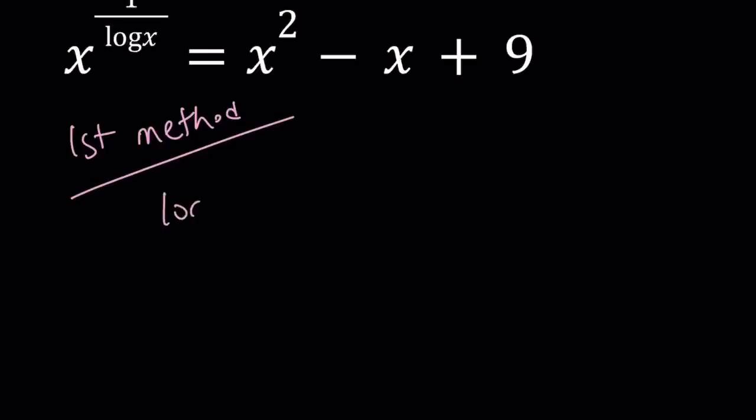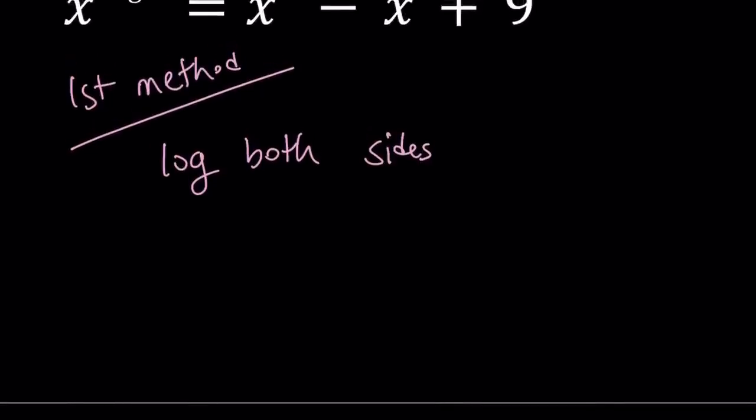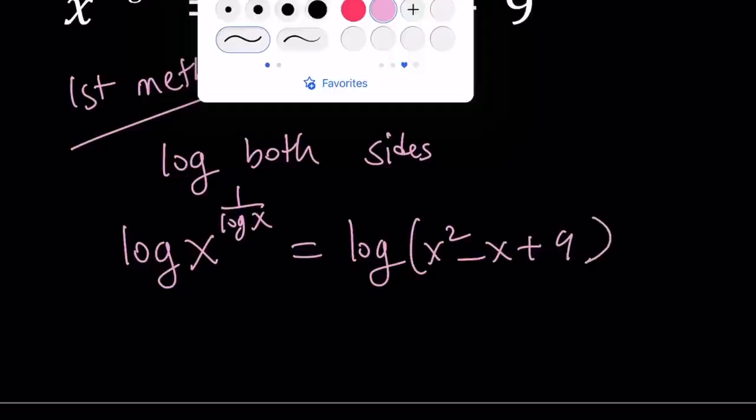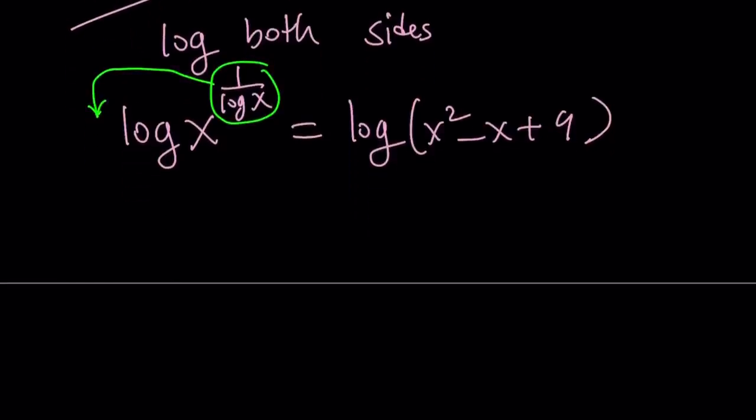For my first method, I'm going to log both sides. And when I say log, I mean base 10, not ln. You could definitely use ln, but I don't think that's going to be very helpful. If you log both sides, you get log x to the power 1 over log x. When you log both sides, there's a purpose, right? We want to get rid of the exponents, especially when the exponents are variables. Let's go ahead and move the 1 over log x to the front, and now we get something super-duper interesting. They cancel out.